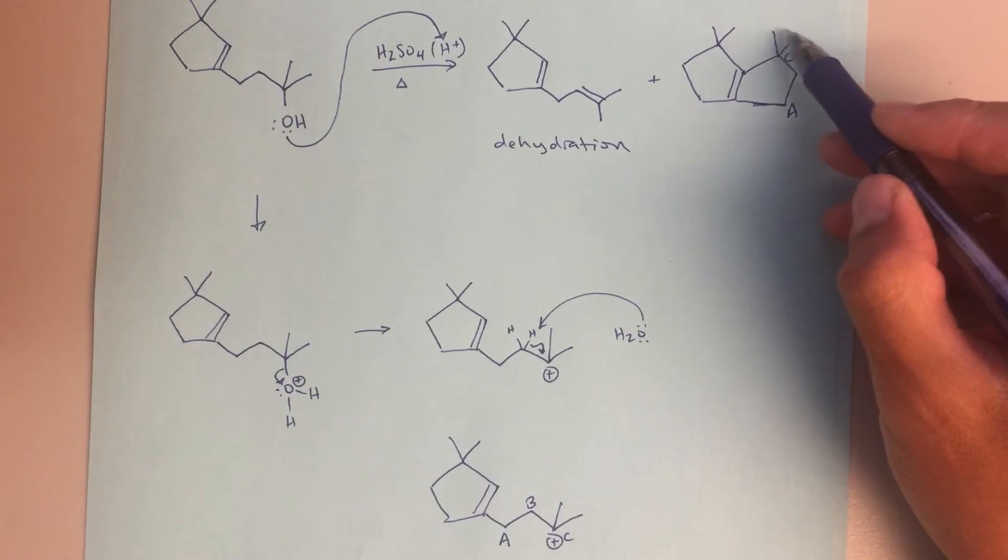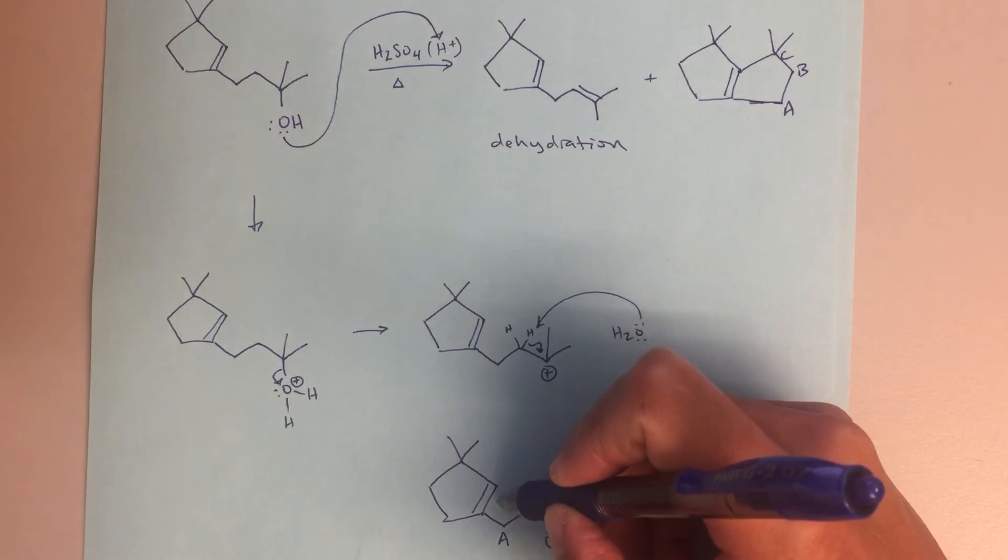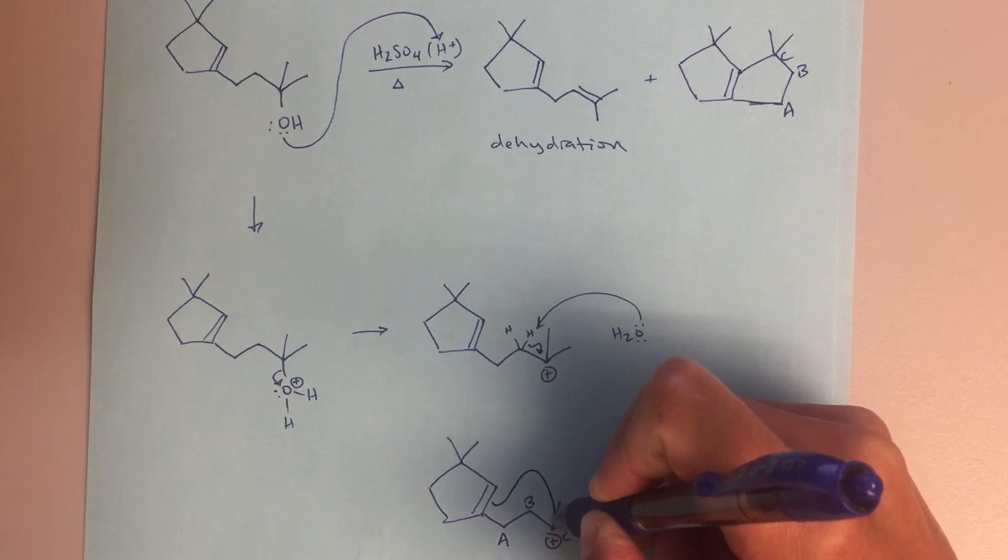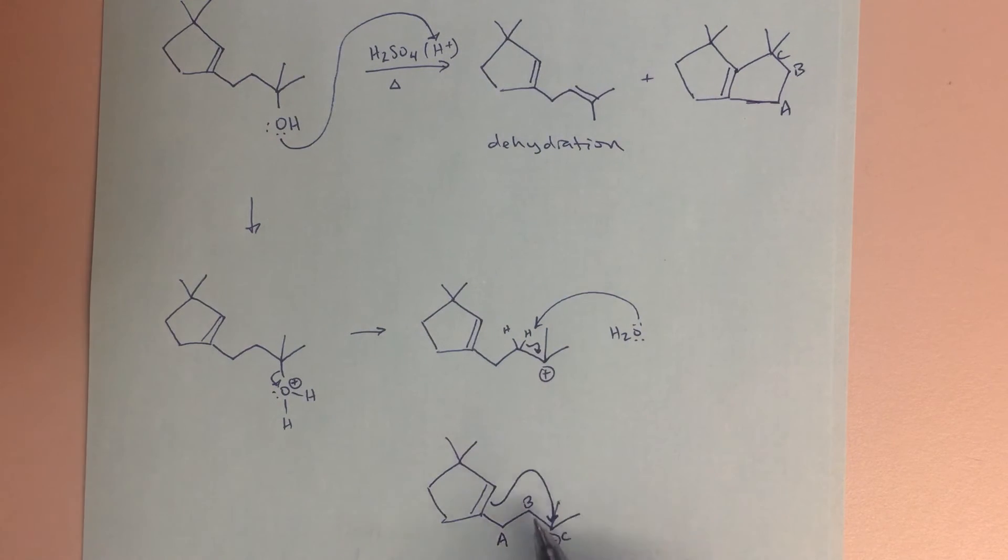And then these two methyl groups up here, right, those could be these methyl groups here. So, one thing that can happen, arrow got a little funky there, but I can take these electrons from my alkene, and those electrons can go and form a new bond, new sigma bond with this carbocation carbon C.